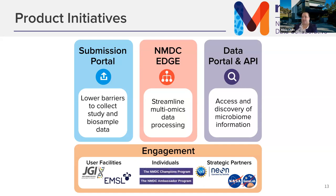We work closely with the Joint Genome Institute and EMSL — two Department of Energy facilities that generate a lot of omics data. JGI generates sequencing-based data and EMSL generates mass spec data. We have two engagement programs: the Champions Program and the Ambassadors Program. There can be funding to travel to conferences, and we work with people to improve data standards. What we'll focus on today is the partnership with NEON.